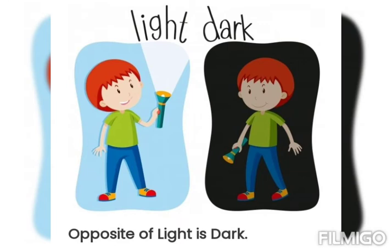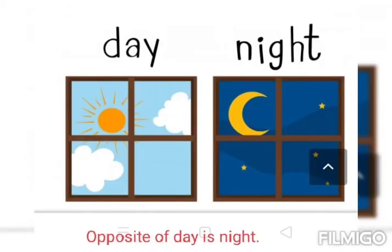Light, dark — prakash, andhera. Day, night — din, raat.